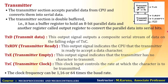The transmitter section consists of a transmitter buffer and transmit control. The transmit buffer converts parallel data from the processor into serial data for transmission. The transmitter section is double-buffered — it has a buffer register to hold 8-bit parallel data and another output register to convert parallel data into serial bits. Control signals include transmit ready, transmit empty, and transmitter clock.